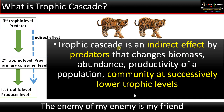Let me repeat that definition once more. Trophic cascade is an indirect effect by predators that changes the number, abundance, or productivity of a population at successively lower trophic levels. Here the predator, by controlling the prey population, is actually favoring the growth and abundance of green plants at the producer level. This effect is termed as trophic cascade.